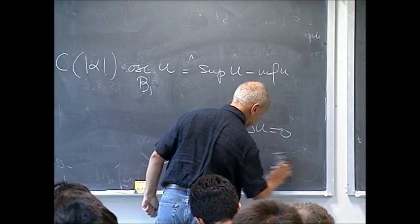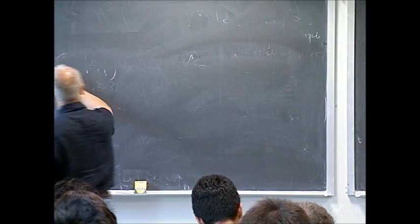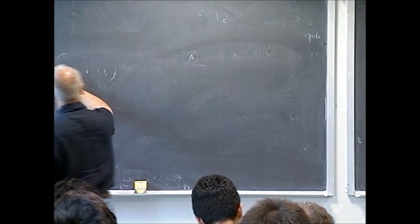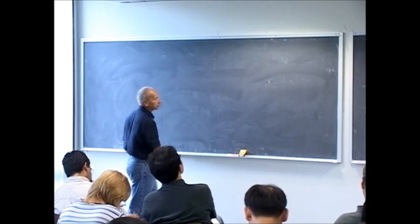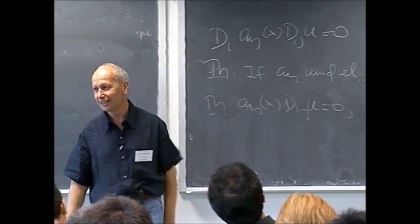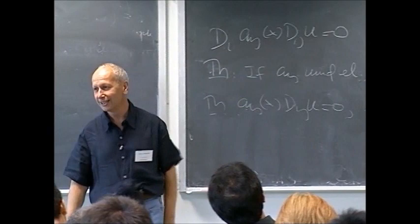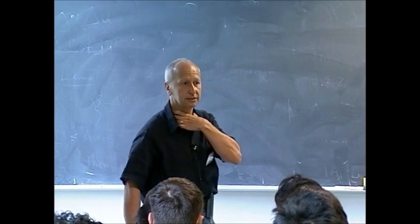Today I want to review how the need to study such problems arises — why would you ever need to consider an equation with bounded measurable coefficients? So the question is: why should we look at aᵢⱼ(x) with no regularity assumption?